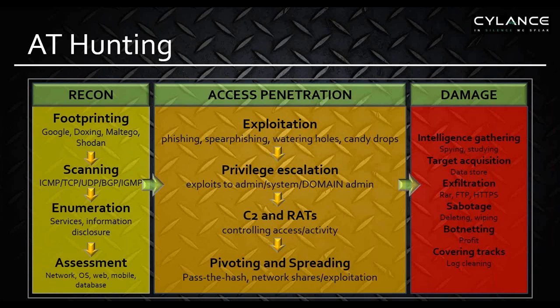Moving into privilege escalation — escalating from a normal user to an admin, from an admin to a domain admin — and system-level privileges. Then setting up shop to come back any time you want, with RATs and pivoting and spreading, finding and leveraging other systems, pulling out hashes and passwords from the local system to gain access into systems that are nearby or on the local network — so pivoting and spreading.